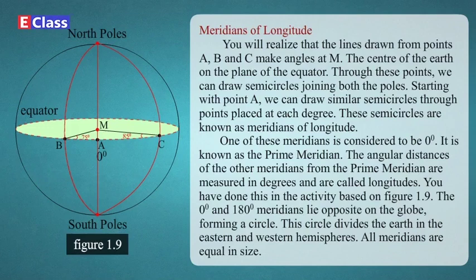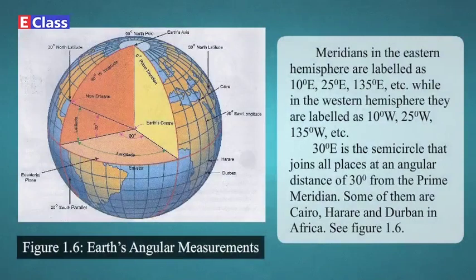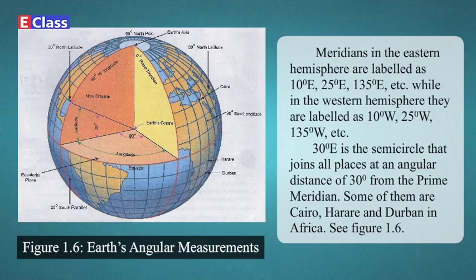These semicircles are known as meridians of longitude. One of these meridians is considered to be 0 degrees — it is known as the prime meridian. The angular distances of the other meridians from the prime meridian are measured in degrees and are called longitudes. The 0-degree and 180-degree meridians lie opposite on the globe, forming a circle that divides the earth into the eastern and western hemispheres. All meridians are equal in size. Meridians in the eastern hemisphere are labeled as 10°E, 25°E, 135°E, etc., while in the western hemisphere they are labeled as 10°W, 25°W, 135°W, etc. 30°E is the semicircle joining all places at an angular distance of 30 degrees from the prime meridian — some of them are Cairo, Harare, and Durban in Africa.